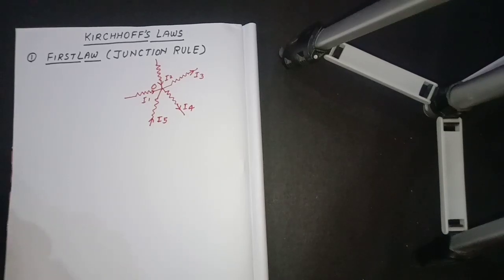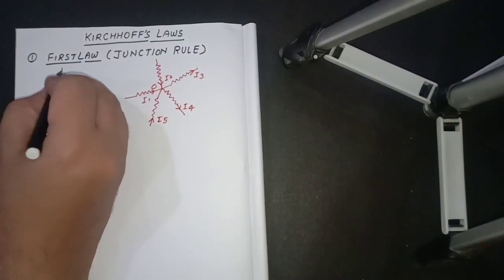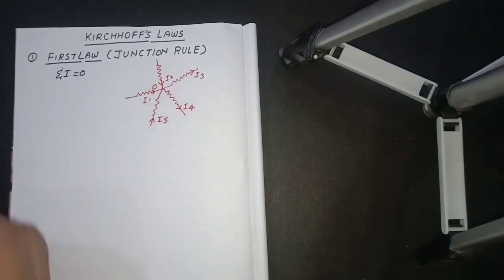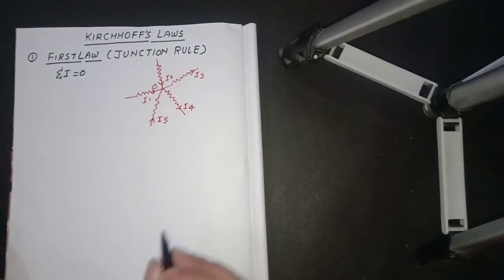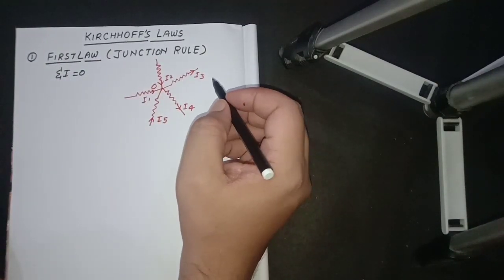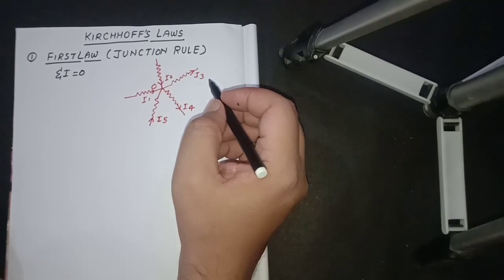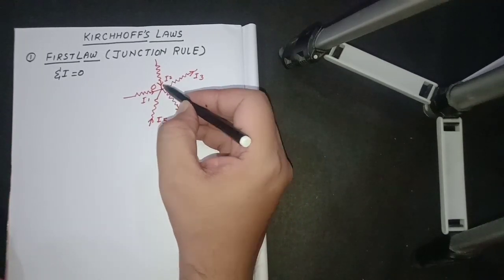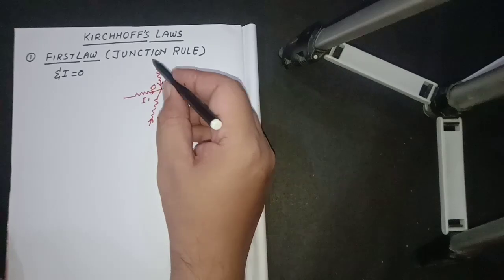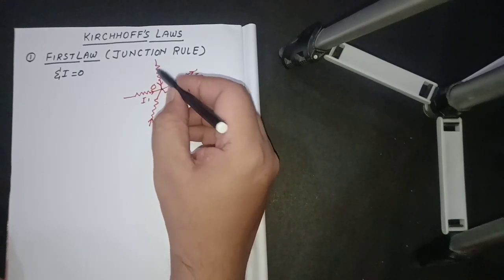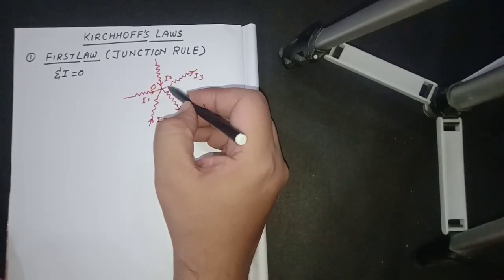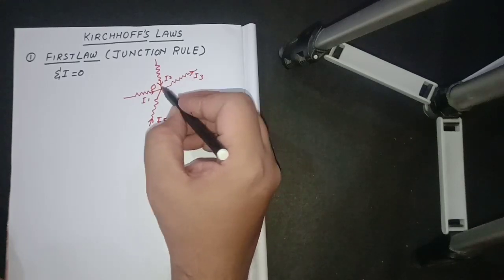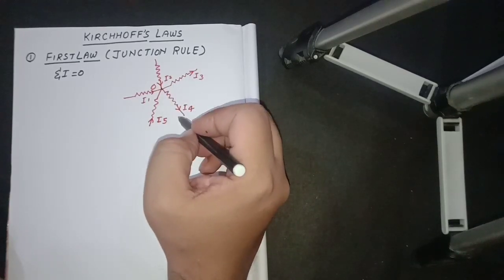So in symbolic form we can represent it as sigma I is equal to zero. The algebraic sum means that we have to take the currents with sign. Here we can see that O is the junction point. The currents going towards the junction will be taken as positive, and the currents leaving the junction will be taken as negative.